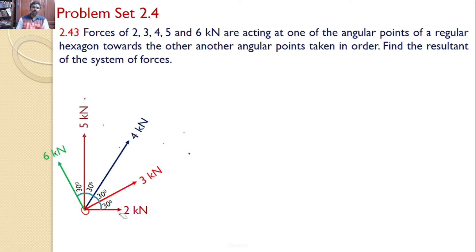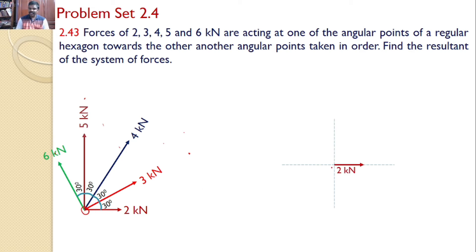So this is the given problem. There are five forces with the given magnitudes and angular positions, and our interest is to find their resultant. As usual, we resolve all five forces along the x-axis and y-axis. Since the 2 kilonewton force is acting along the x-axis, there is no need to resolve it. Now the 3 kilonewton force makes an angle of 30 degrees with the horizontal, so we resolve it into x and y components.